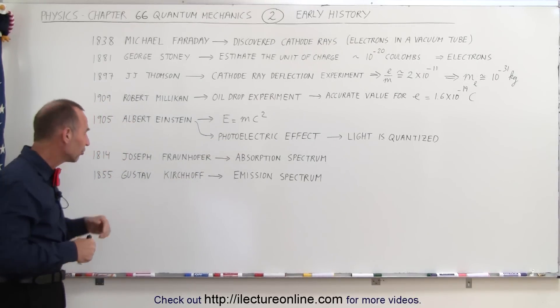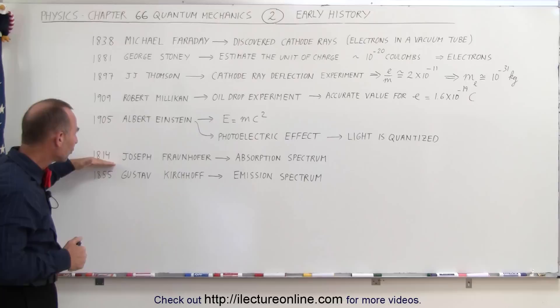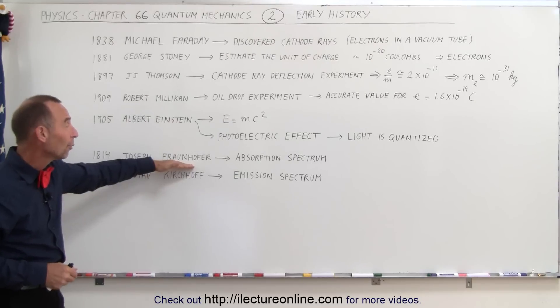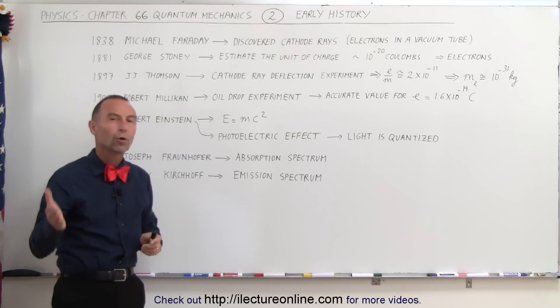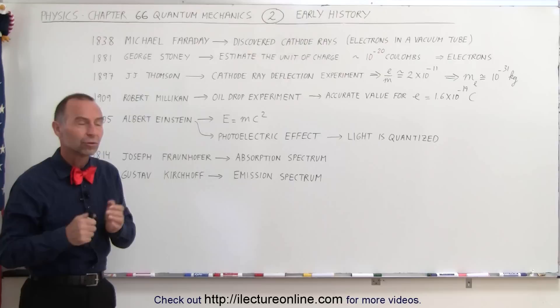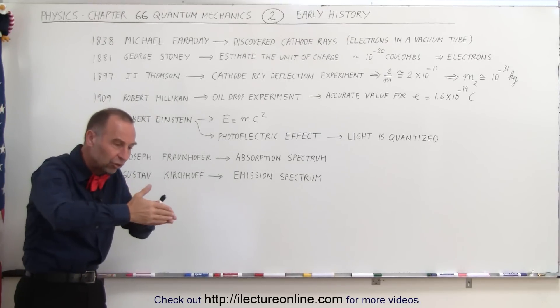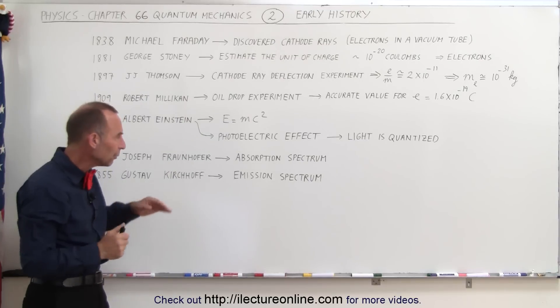Then, going back a little bit further in history again, back in 1814, Joseph Fraunhofer, a very famous name in physics, was able to show that there was an absorption spectrum. Earlier than that, Isaac Newton had already shown that when you take the sunlight and shine it through a prism, that it shows all the colors of the rainbow.